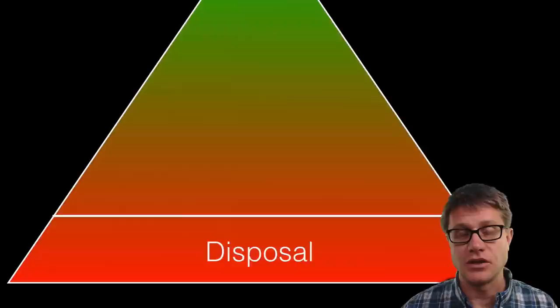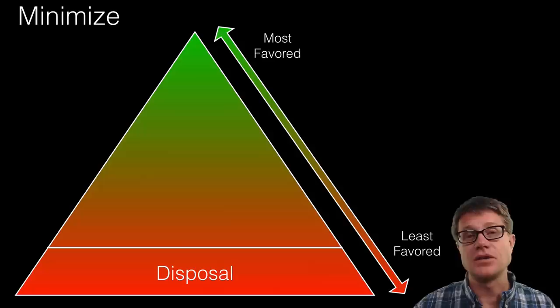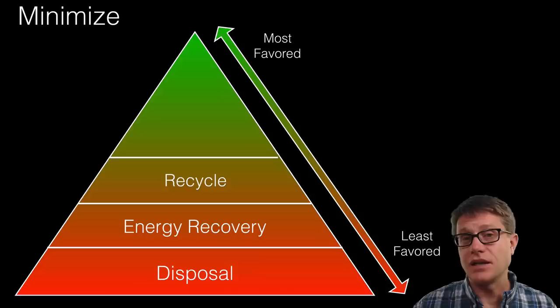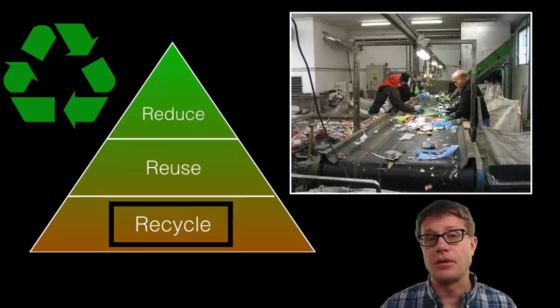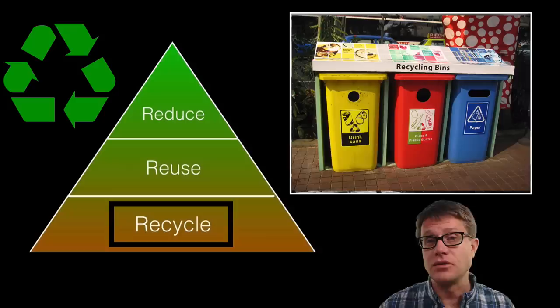How do we minimize the amount of waste? We do not want to dispose of it. We can think of it from least favored to most favored: we can dispose of it or get some energy from it, but we want to recycle it if we can, reuse it if we can, and reduce it in the first place. In recycling, as material goes to the landfill, we have people that can remove some recyclable material that we can use again. That is pretty energy intensive, so if we can do the sorting before it gets there, that is helpful.